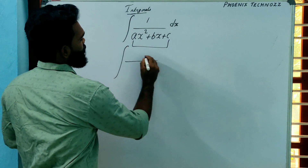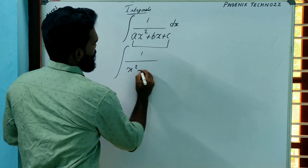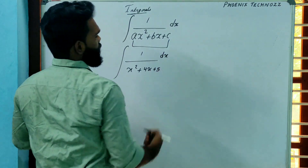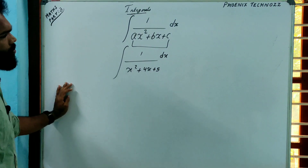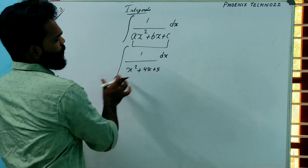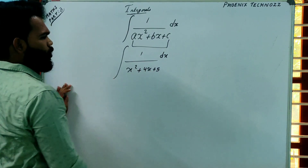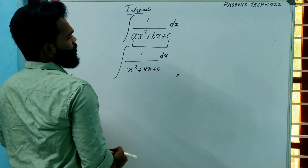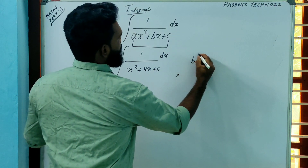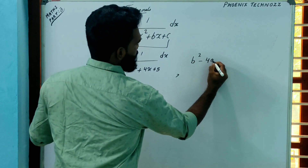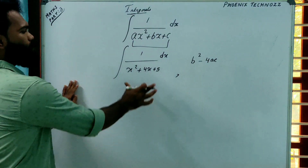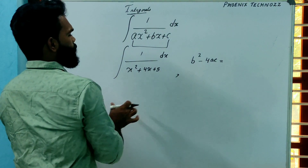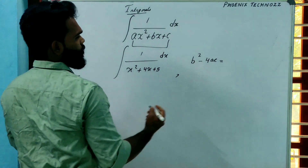Our first example is: integral of 1/(x²+4x+5) dx. In an exam, the conventional method for this type of question is to complete the square at the denominator and apply the standard formula. But in the shortcut method, the first main idea is to find the discriminant of the quadratic equation. We have to find the discriminant value of x²+4x+5.